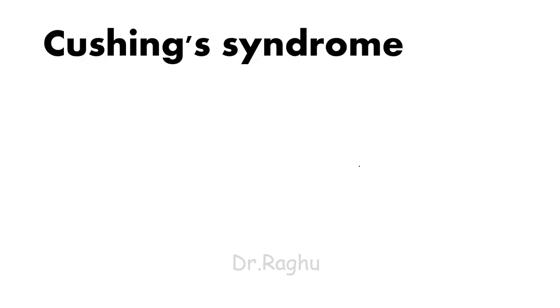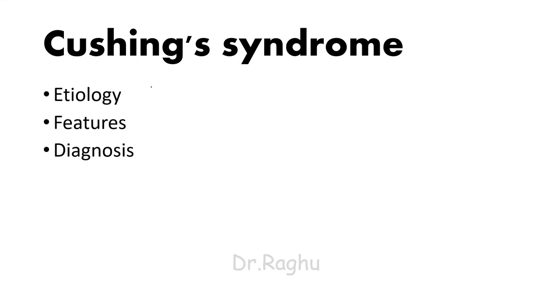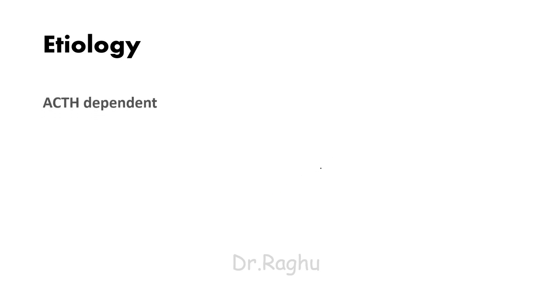Let's discuss Cushing's syndrome under the following subheadings: etiology, clinical features, and diagnosis. First, etiology — meaning the cause. Etiology can be ACTH-dependent or ACTH-independent.